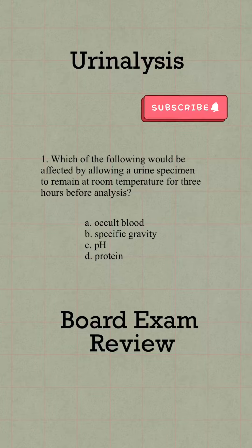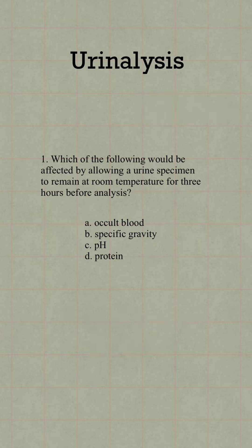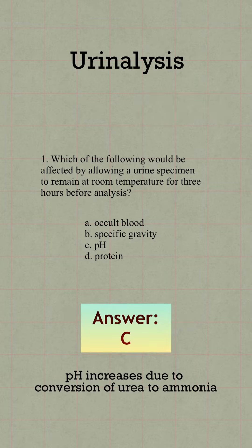Question number 1. Which would be affected when urine remains at room temperature for 3 hours? The answer is C. pH increases when urea is converted to ammonia.